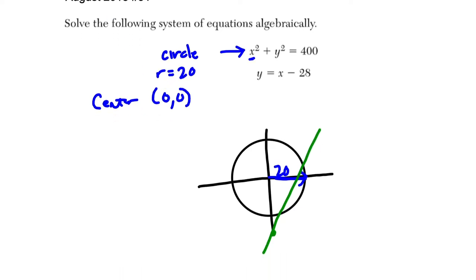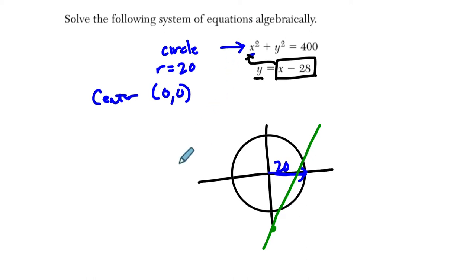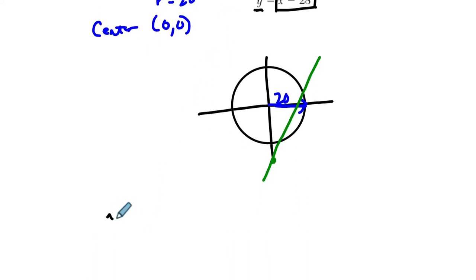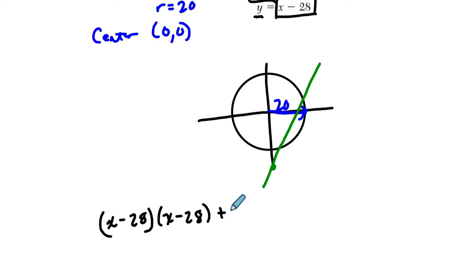So with a problem like this, I'm going to use typically substitution. I'm going to plug one equation into the other. And this one always tells us that y equals x minus 28. So we can plug that directly in here. We can substitute it. So instead of x squared plus y squared, let's take a look. We have x minus 28 squared. So that's x minus 28 times itself. And then plus y squared equals 400.